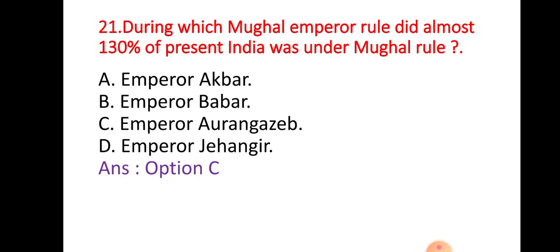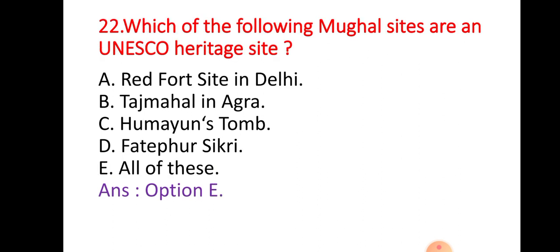Question 21: During which Mughal Emperor's rule did almost 130% of present India come under Mughal rule — that is, approximately 1.3 times the present Indian subcontinent? The empire extended up to the Deccan and Southern Tamil Nadu. Option A: Emperor Akbar; Option B: Emperor Babar; Option C: Emperor Aurangzeb; Option D: Emperor Jahangir. The right answer is Option C — Emperor Aurangzeb, whose empire stretched from Afghanistan to South India.